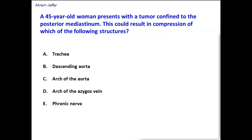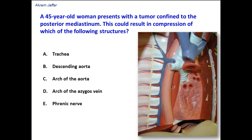For descriptive purposes, the mediastinum is divided by the transverse thoracic plane. This is a plane that passes through the sternal angle anteriorly, and posteriorly is located at the level of the intervertebral disc between T4 and T5 vertebra — the transverse thoracic plane.